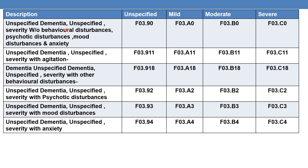Similarly, this is the entire set of codes for unspecified dementia at various severity levels. The same logic applies: fifth character 0=without any disturbances; fourth character A=mild, B=moderate, C=severe. Fifth character 1=behavioral disturbances; sixth character 1=agitation, sixth character 8=other behavioral disturbances. Fifth character 2=psychotic disturbances, 3=mood disturbances, 4=anxiety.